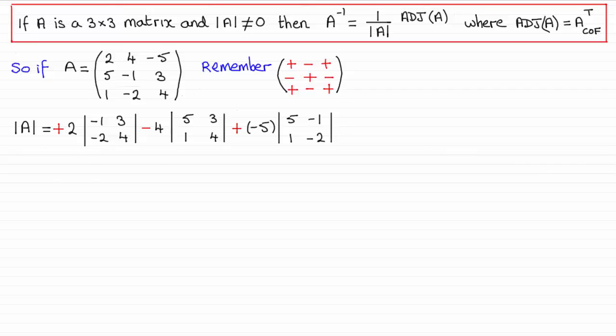So, if you work that out, you'll find you get minus 19. And so it doesn't equal 0, so we can actually find the inverse of this 3x3 matrix.